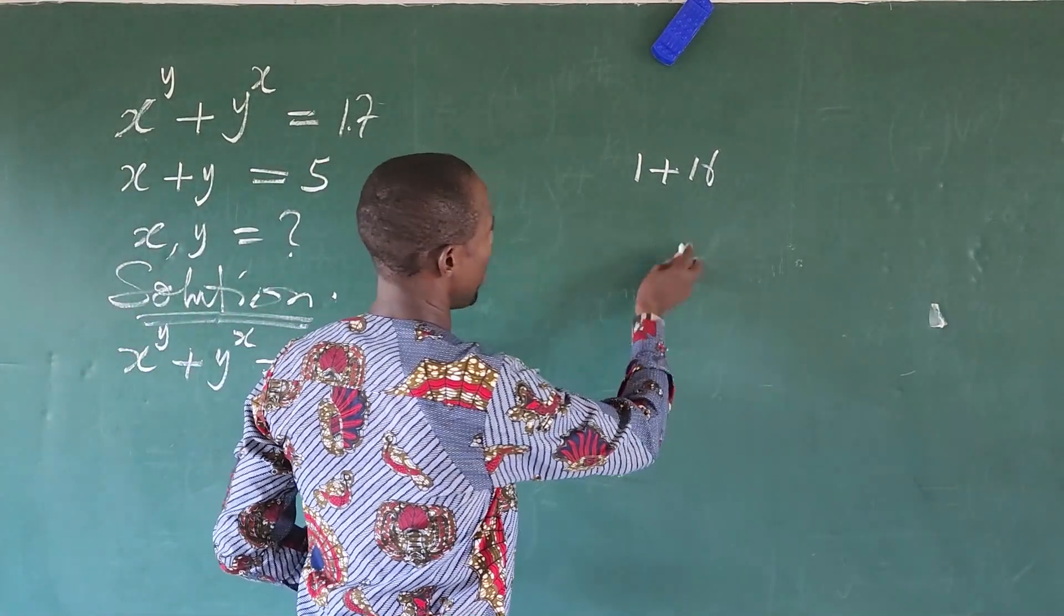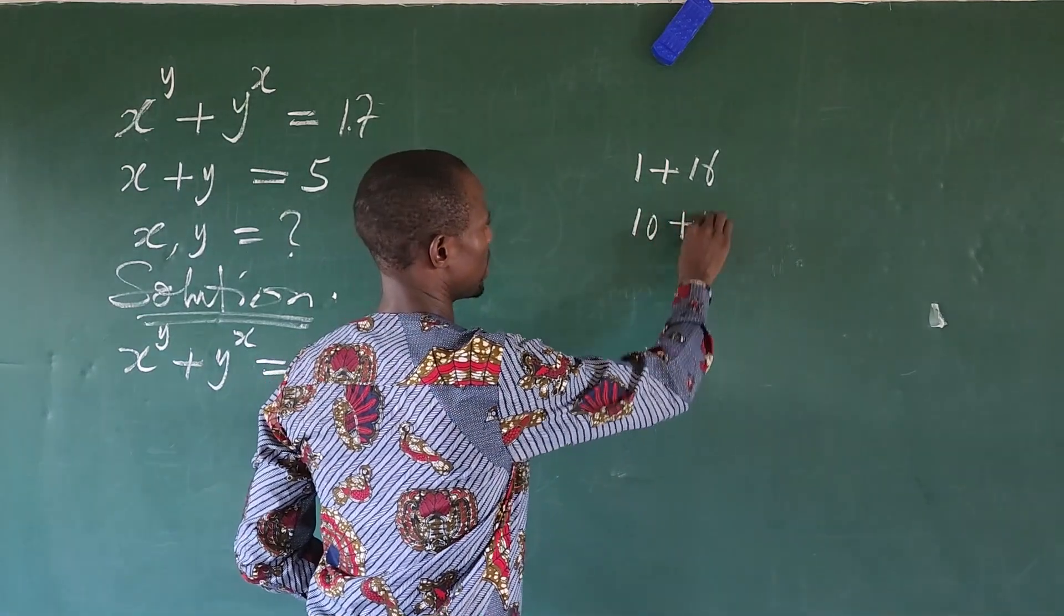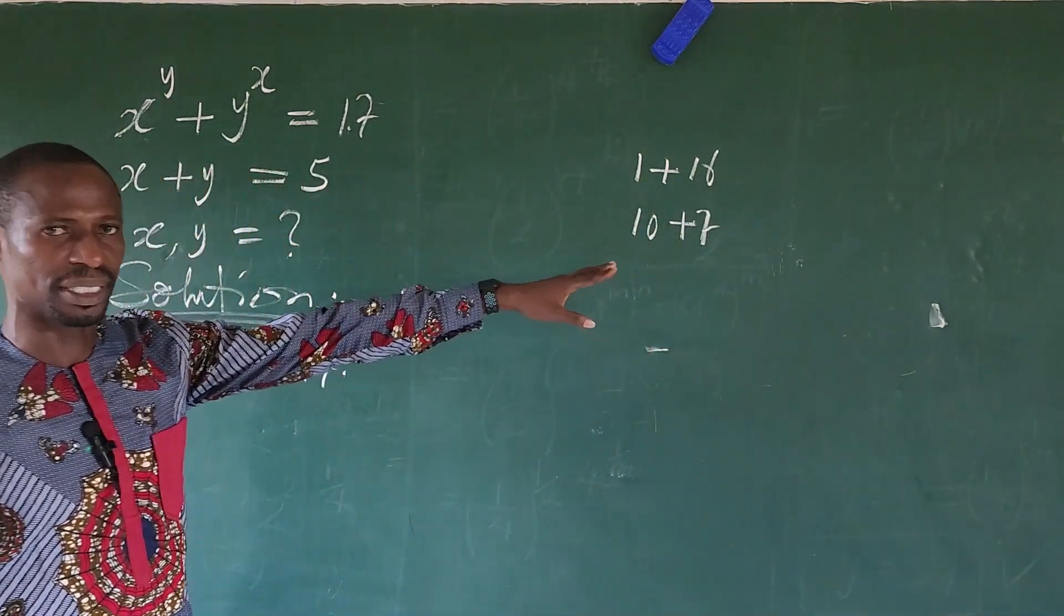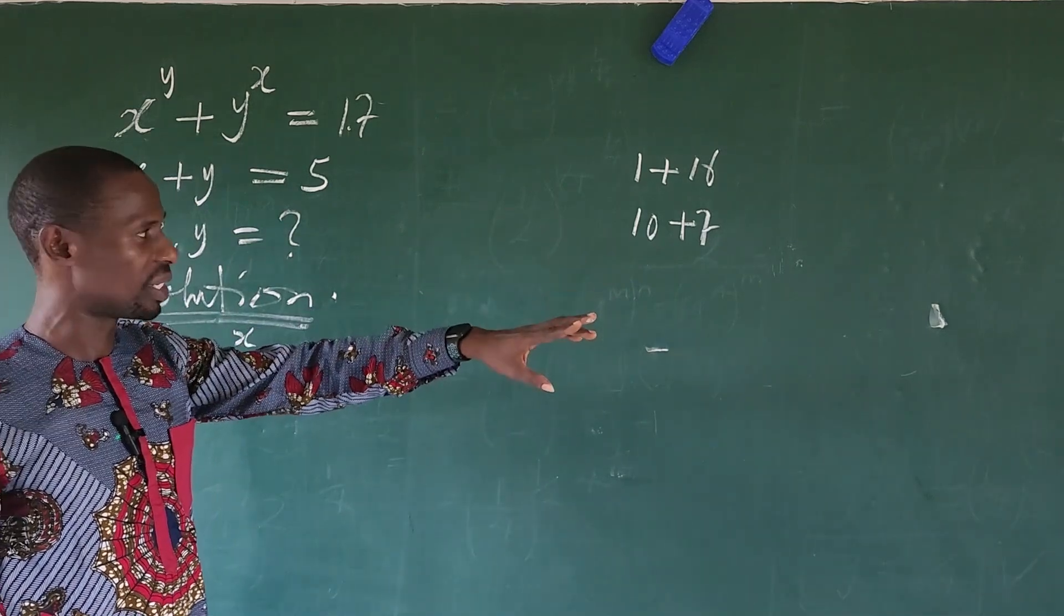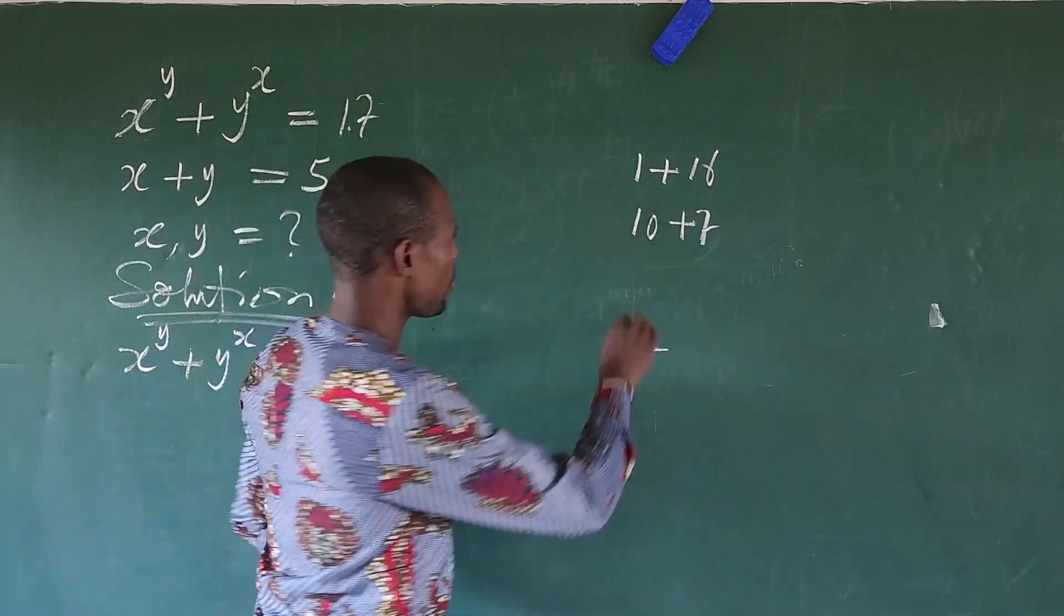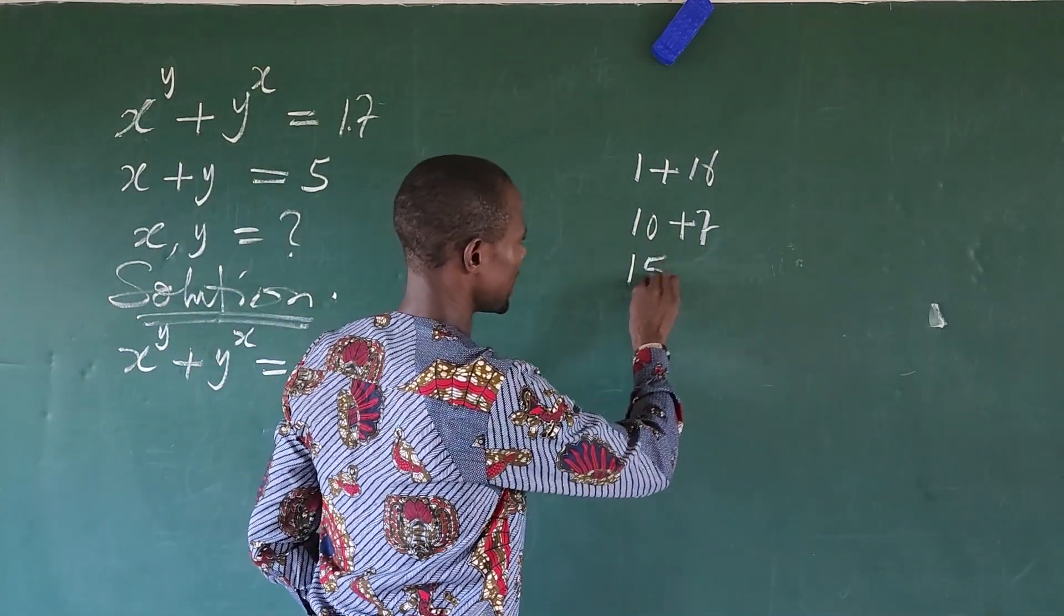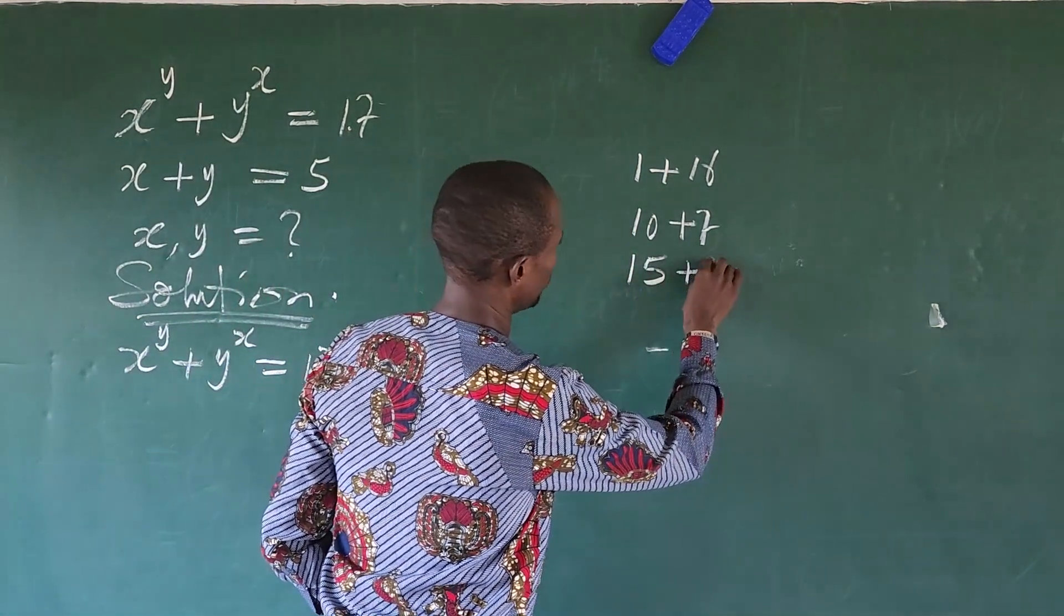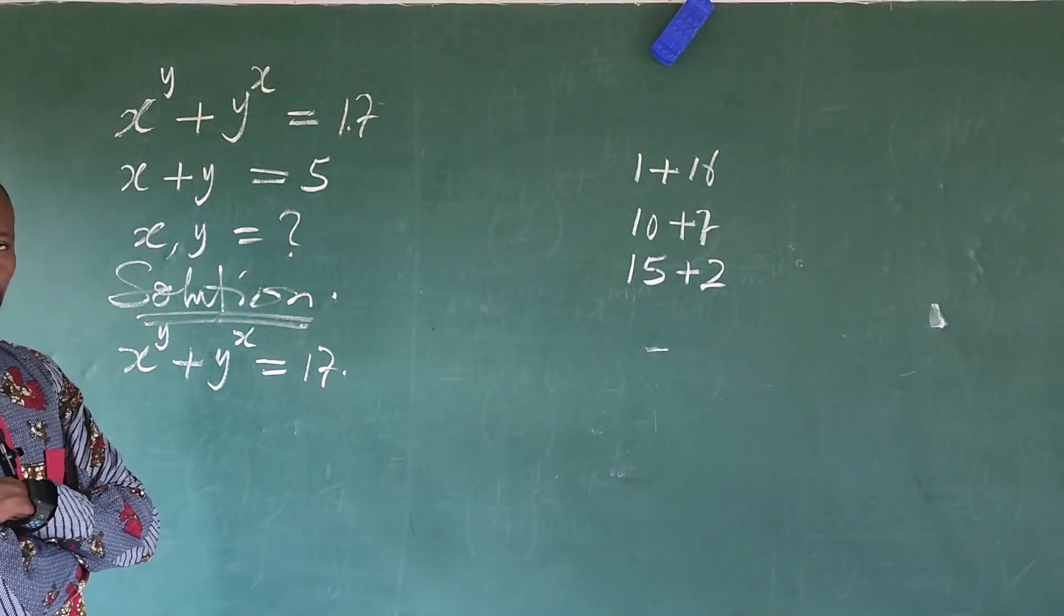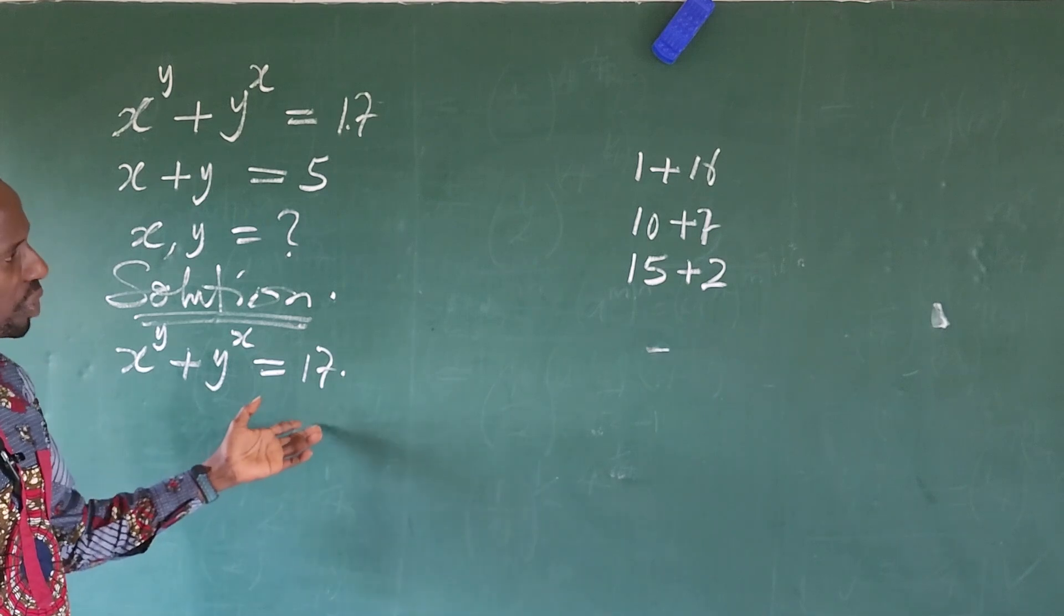Again, 17 could be written as your 10 plus 7. That will also give us 17. Again, we can write 17 as 15 plus 2. This will also give us 17. But none of this will fit into what we want here.